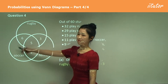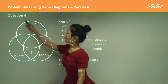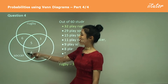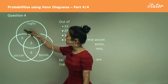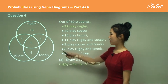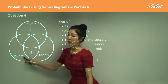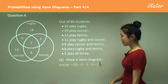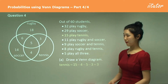Now let's fill in the remaining solo regions. For rugby: the whole circle is 32, but six play soccer and rugby, five play all three, and three play rugby and tennis. So to find people who just play rugby, we do 32 minus six, five, and three, which gives 18. For soccer: 29 minus six, five, and four gives 14. For tennis: 15 minus four, five, and three gives three.